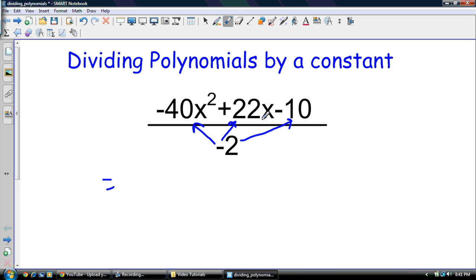It looks a little different than the distribution property, which is why people have trouble seeing it, but it's still the distribution property, okay? So what we end up with is negative 40x squared divided by negative 2 plus 22x divided by negative 2 plus negative 10 divided by negative 2.